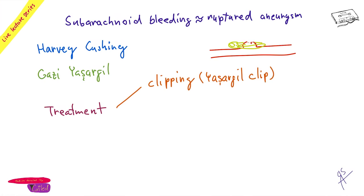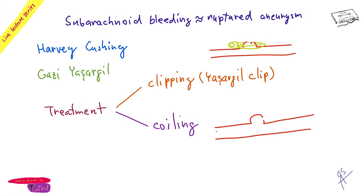With the blood around the vessels making them fragile, clipping is considered the pinnacle of neurosurgery. Finland is a good place to train because of the high case volume. The second option is coiling — an endovascular approach using the Seldinger method, similar to coronary angiography. You navigate to the brain vessels and place coils (wires) inside the aneurysm.